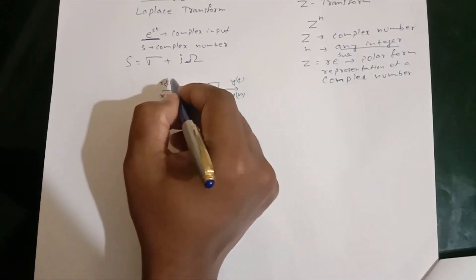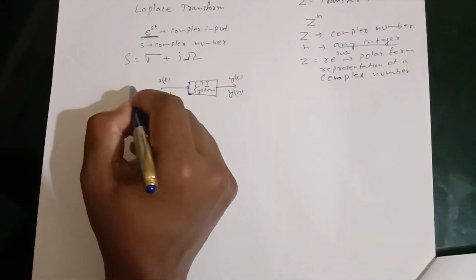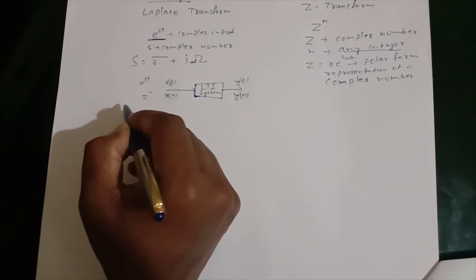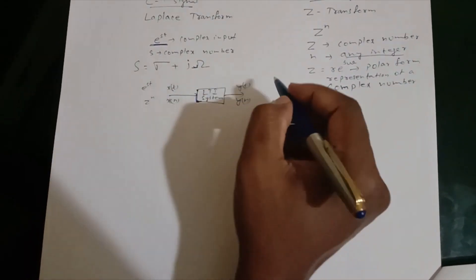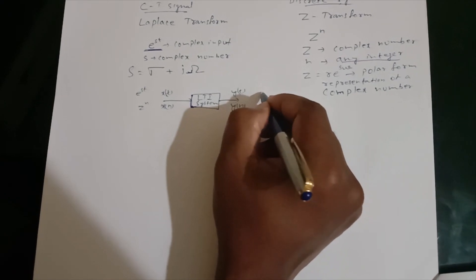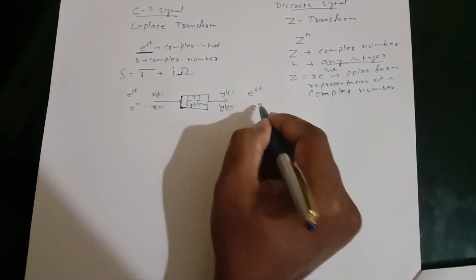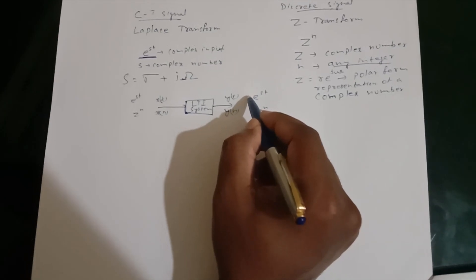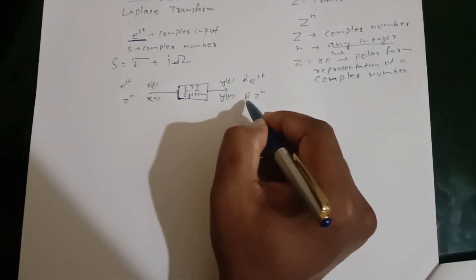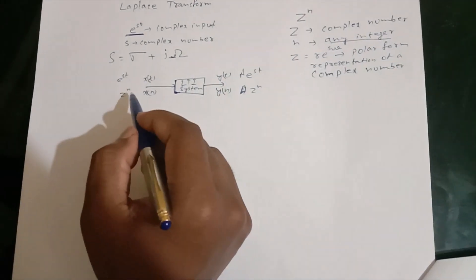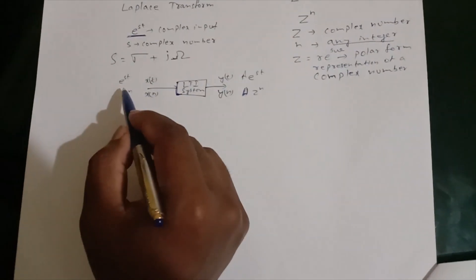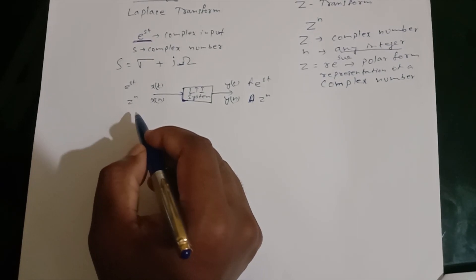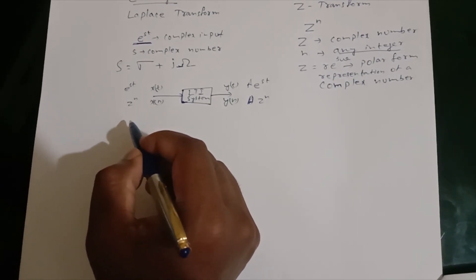If we apply a complex input, whether it is e raised to st or z raised to n, we get a similar complex output — that is, e raised to st or z raised to n — with some changes in amplitude only. This is one peculiarity of using complex inputs to a system: it gives the same output with some changes in the amplitude.